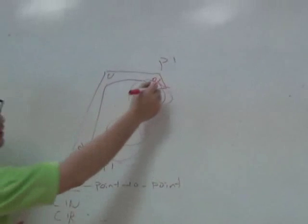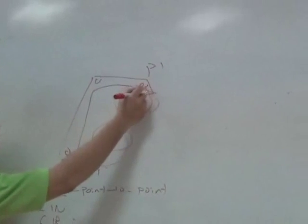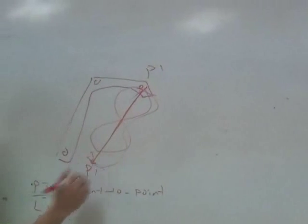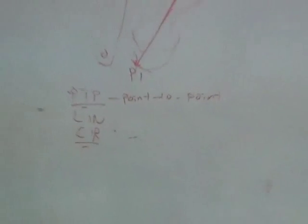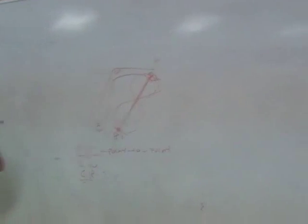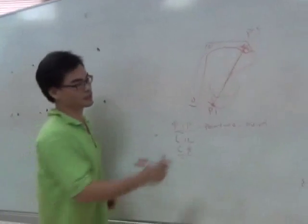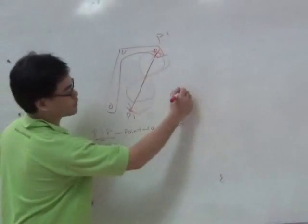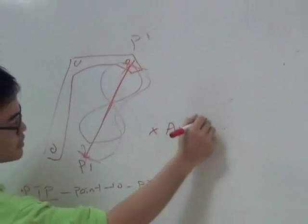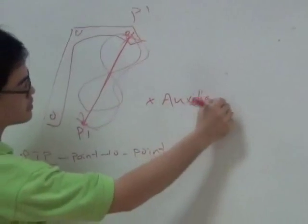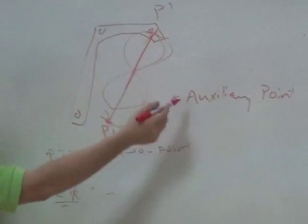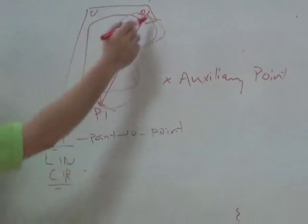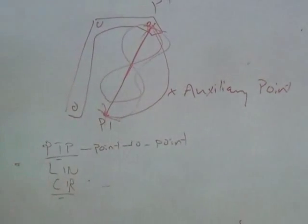A linear motion is a direct motion — directly from that point to this point, in a straight line. And if you're choosing a circular motion, it draws a circle. So in circular motion, we need to teach another point — this is what we call as auxiliary point. So we've got a starting point, auxiliary point, and end point. Then we follow this in a circular arc.